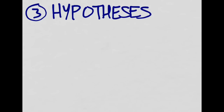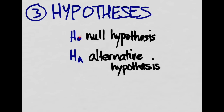Step three is hypotheses. We have two kinds: the null hypothesis, which we call H sub zero, and our alternative hypothesis, H sub A. The null hypothesis is called null because usually it's the hypothesis that there's no difference between two things — meaning null, meaning zero. The null hypothesis is the one we're trying to test in our study, and the alternative hypothesis is the one we came in looking to prove, consistent with our research hypothesis.